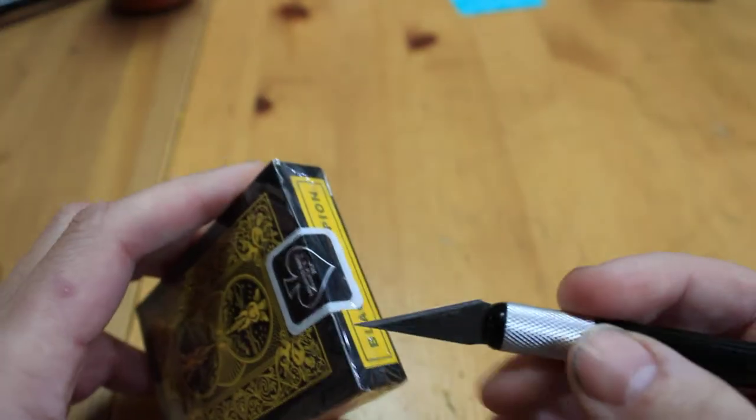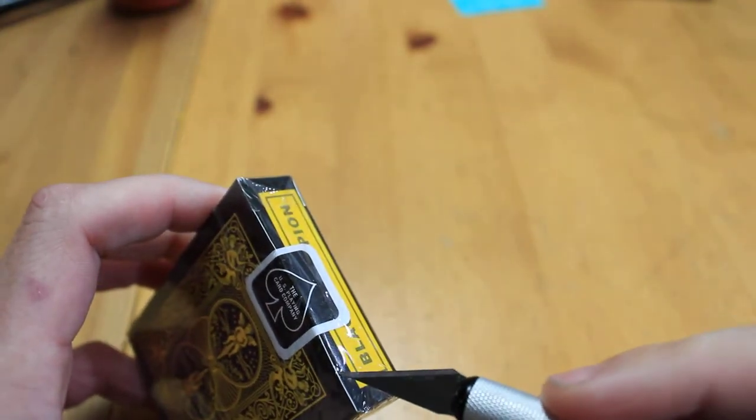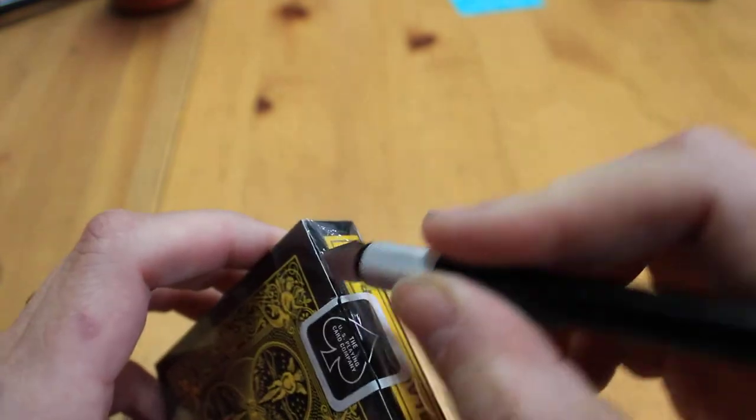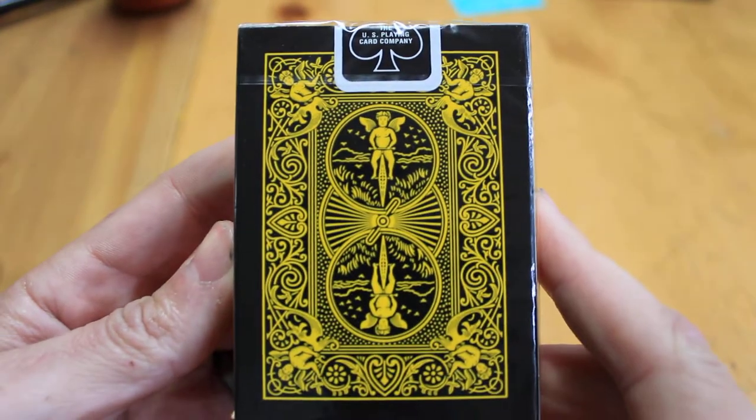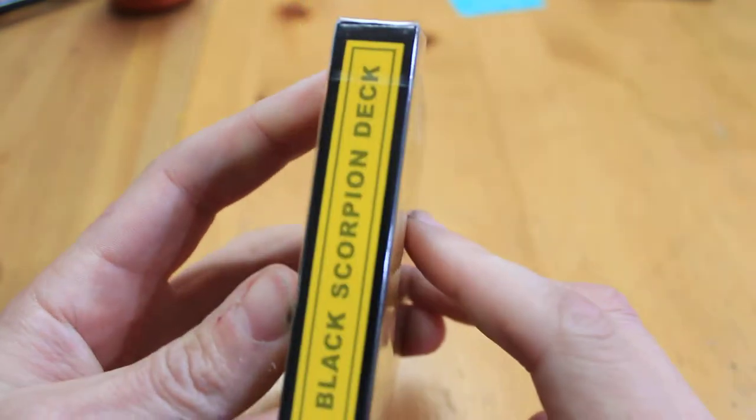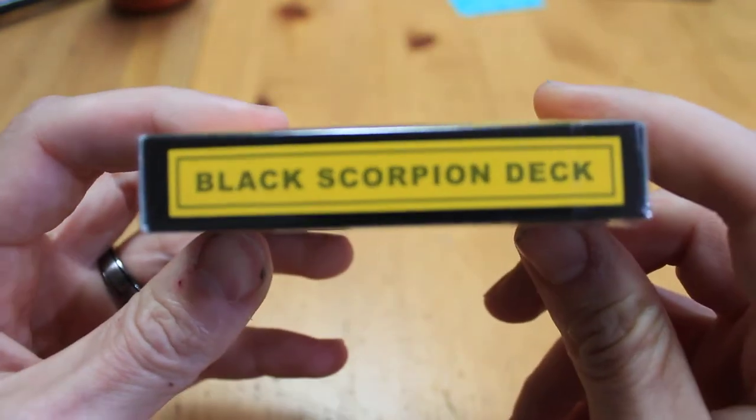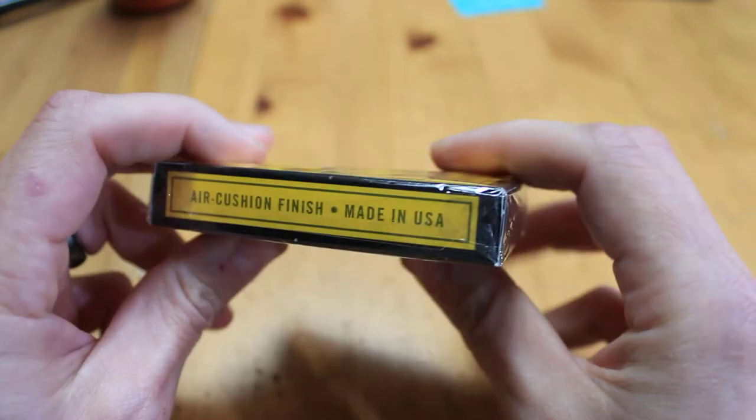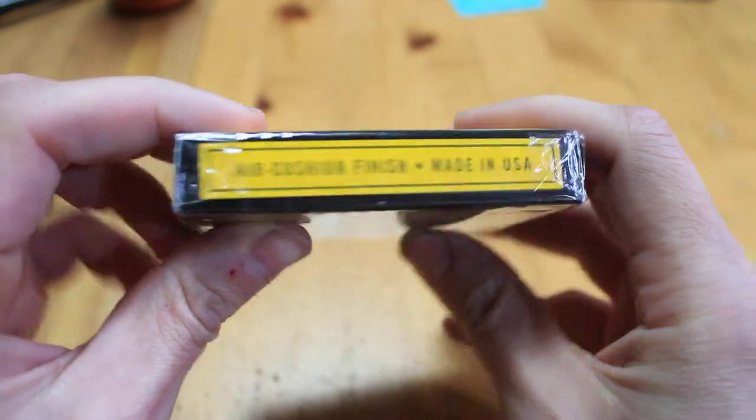So let's get the nice trusty hobby knife out and we're going to open her up. There we go. So on the back, that's her back. Black Scorpion Deck. Typical stuff on the bottom. Air Cushion Finish Made in the USA. Let's open her.